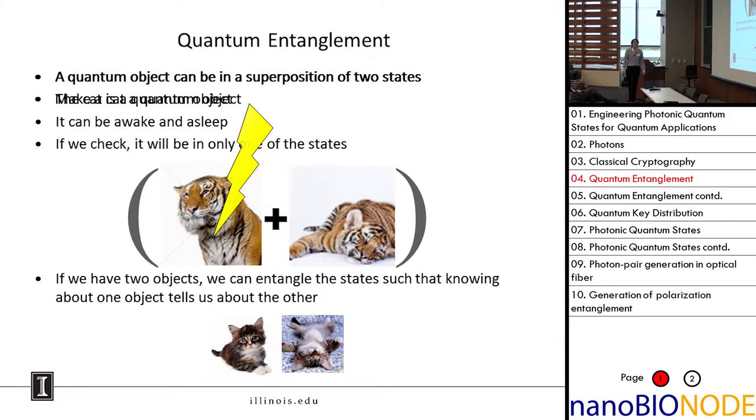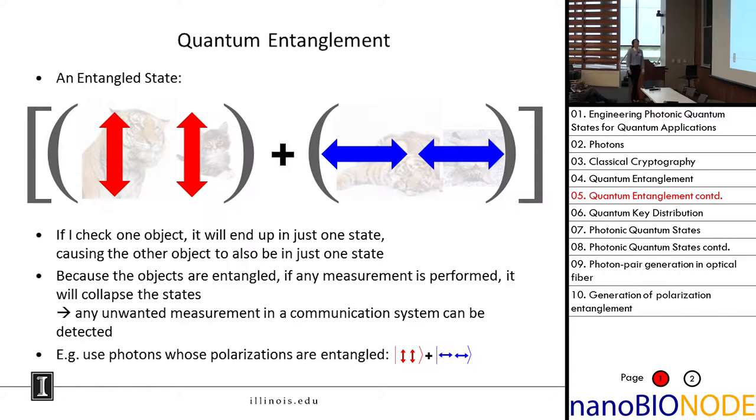Now if we have two objects, we can actually entangle them, such that knowing about one tells us something about the other. This is what an entangled state would look like. If I make a measurement on the tiger and find it awake, that causes the kitten to also be awake. If I measure it asleep, the kitten is also asleep. If I check one object, it's just in one state, causing the other object to also be in just one state.